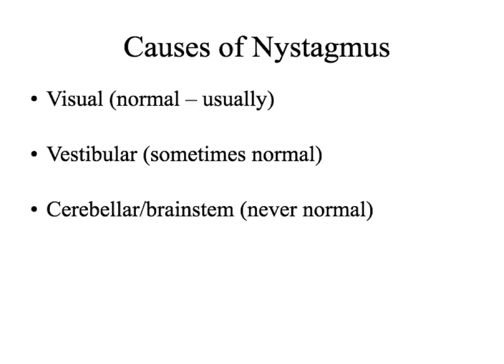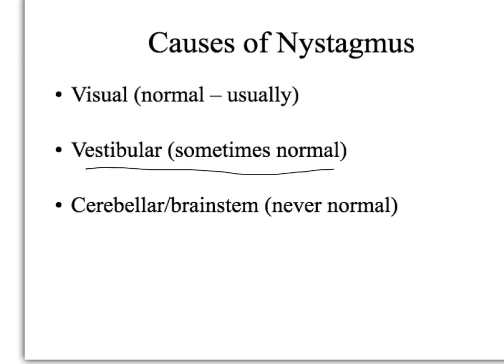You also get a nystagmus when you spin — if you spin in a circle really fast for a short period of time and then stop, the world keeps spinning, and you have a nystagmus during that time, which is part of why it looks like the world is spinning. If you get a lesion in the vestibular system, it causes what's called jerking nystagmus. There are two major types of nystagmus: jerking and pendular. A cerebellar problem can result in a pendular nystagmus.